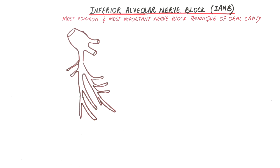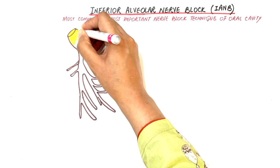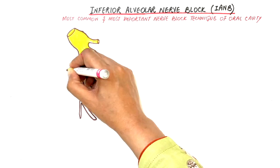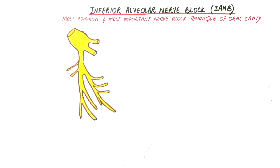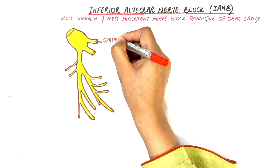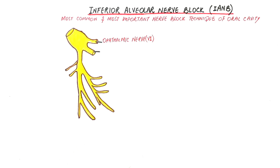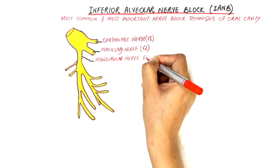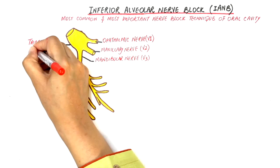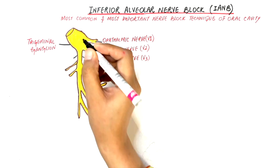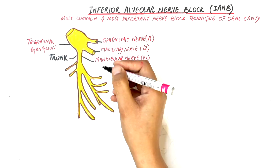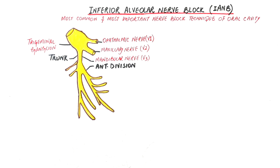The inferior alveolar nerve is one of the sensory branches of the mandibular nerve. The mandibular nerve itself takes its origin from the trigeminal ganglion along with the maxillary and the ophthalmic branches. The maxillary and ophthalmic branches are purely sensory, while the mandibular nerve is the only branch of the trigeminal nerve containing both sensory and motor fibers. After originating from the trigeminal ganglion, the mandibular nerve divides into three parts: the trunk, the anterior division, and the posterior division.